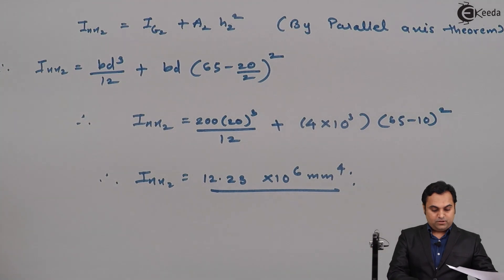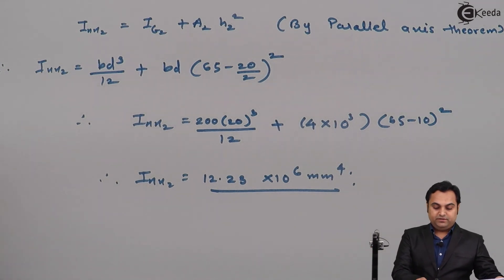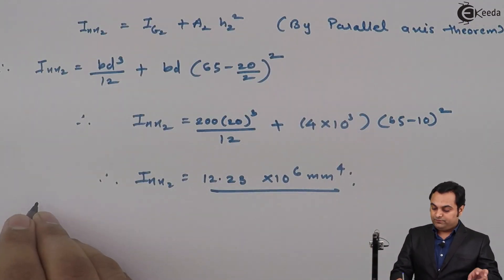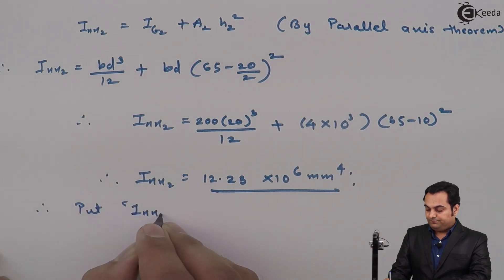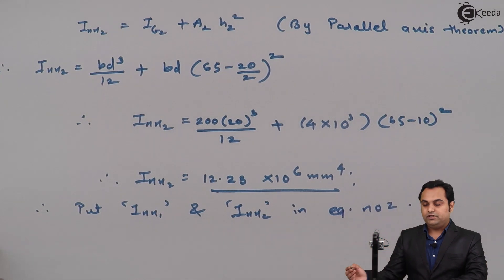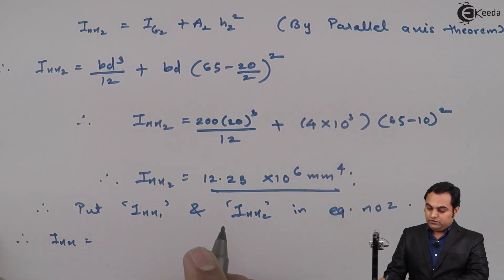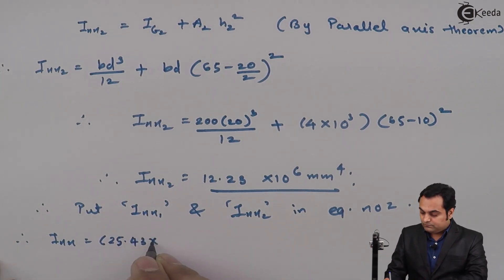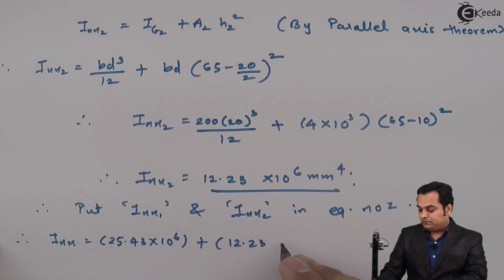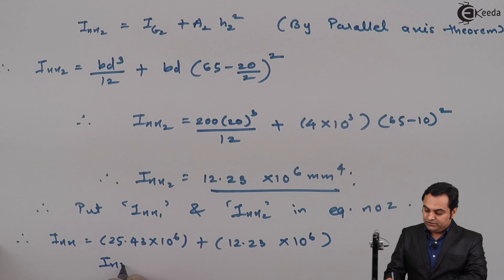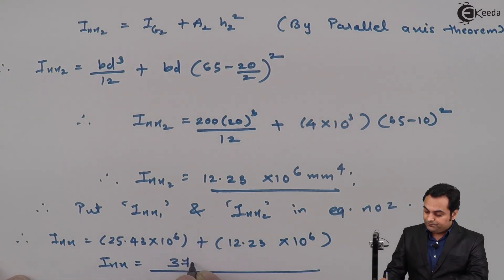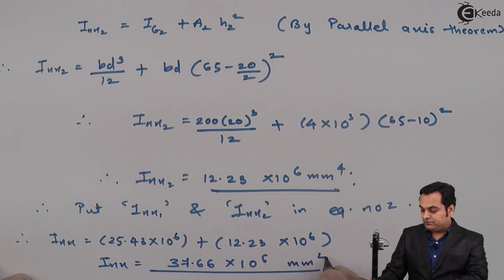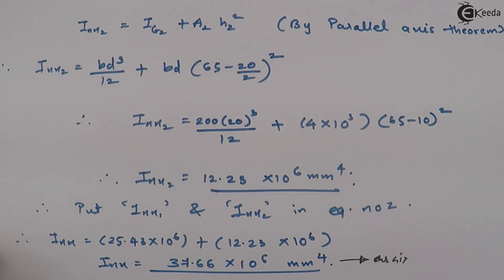Putting Ixx1 and Ixx2 into equation number two: Ixx = 25.43 × 10⁶ + 12.23 × 10⁶ = 37.66 × 10⁶ mm⁴. This is the first answer.